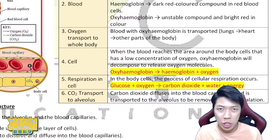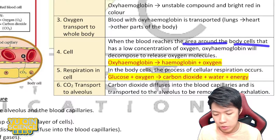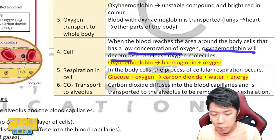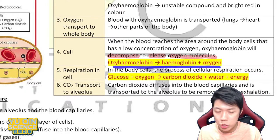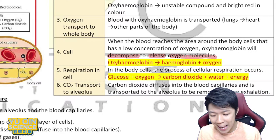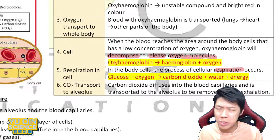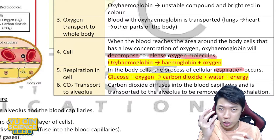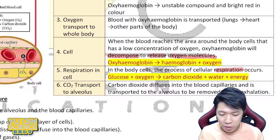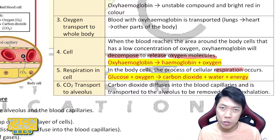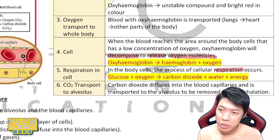When the blood reaches the area around the body cells, oxy-hemoglobin will decompose and release oxygen molecules, and the cell receives the oxygen. The process of cellular respiration then happens: oxygen plus glucose produces energy. That's what respiration is about — taking oxygen from your lungs into the cells so they can carry out respiration and produce carbon dioxide.